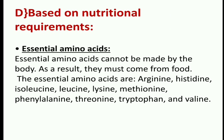Classification of amino acids on the basis of nutritional requirement: they are classified into essential and non-essential amino acids. Essential amino acids cannot be made by our body and must come from food. The essential amino acids are arginine, histidine, leucine, lysine, methionine, phenylalanine, threonine, tryptophan, and valine.